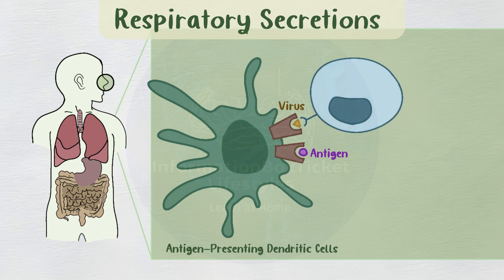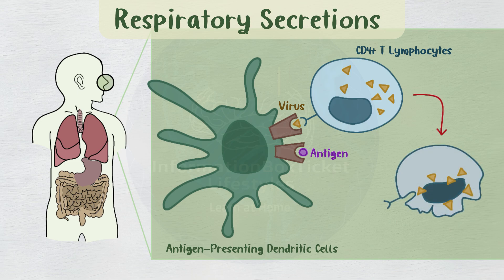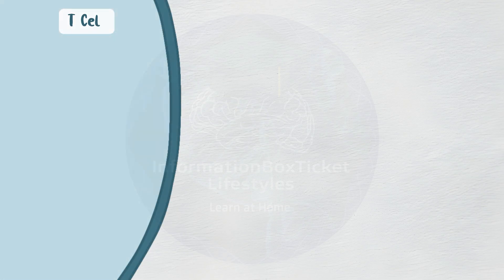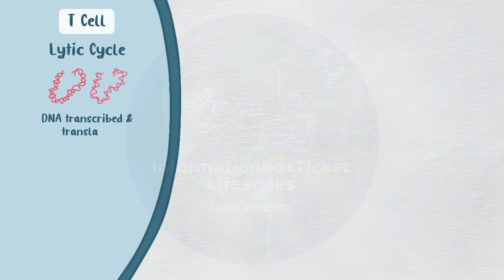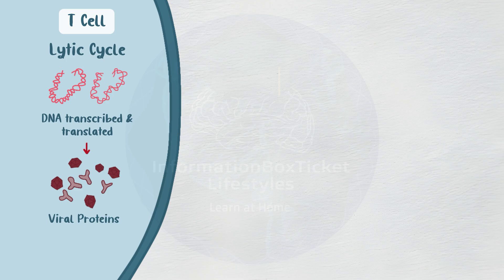The virus activates dendritic cells upon attachment, causing them to move to lymph nodes and engage in interactions with CD4+ T lymphocytes. T cells absorb the virus when they connect with dendritic cells, becoming infected. The virus reproduces most effectively inside T cells, where it undergoes the lytic cycle, in which its DNA is transcribed and translated by cellular enzymes to produce viral proteins.